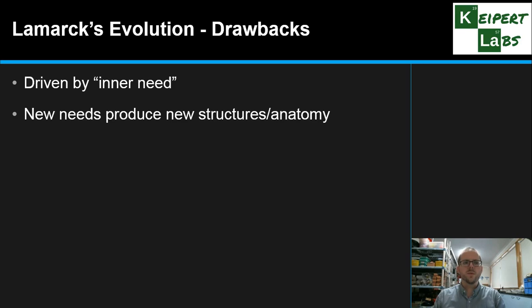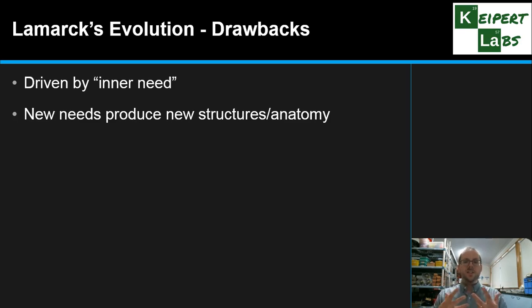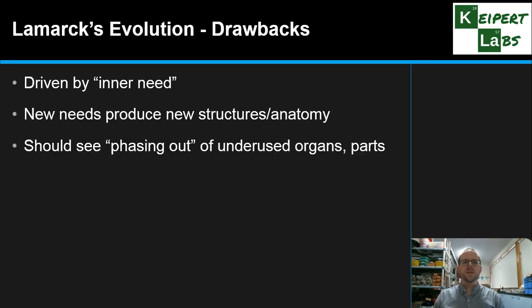These new needs produce new structures or anatomy, so that the need to reach the tops of the trees causes changes in the bone structure, in the length and the muscles of the giraffe, so that as it stretches that kind of becomes part of what that organism is like. But the flip side of that means that if new needs give us new or better-developed structures, then things that we don't use very much — that are underused — should be phased out over time.